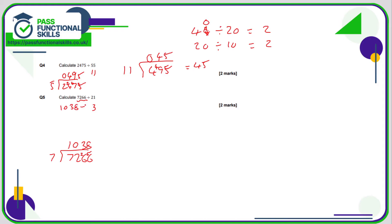So now all we're doing is dividing 1038 by three. One divided by three, zero, carry the one. 10 divided by three is three, remainder one. 13 divided by three is four, remainder one. 18 divided by three is six. And the answer is 346.